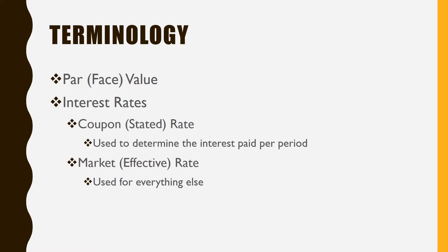The problem is that since bonds are outstanding for 10 or 20 years, interest rates can change. Even though you might be paying two percent, everybody else might be paying three percent, and nobody's going to buy your bonds at two percent. So what they do is adjust the price so that buyers always get the market rate on your bond. That's what causes bonds to be so confusing.